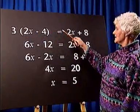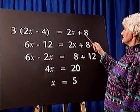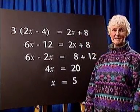On the right-hand side, 2 times 5 is 10, plus 8 is also 18, so our answer is correct.